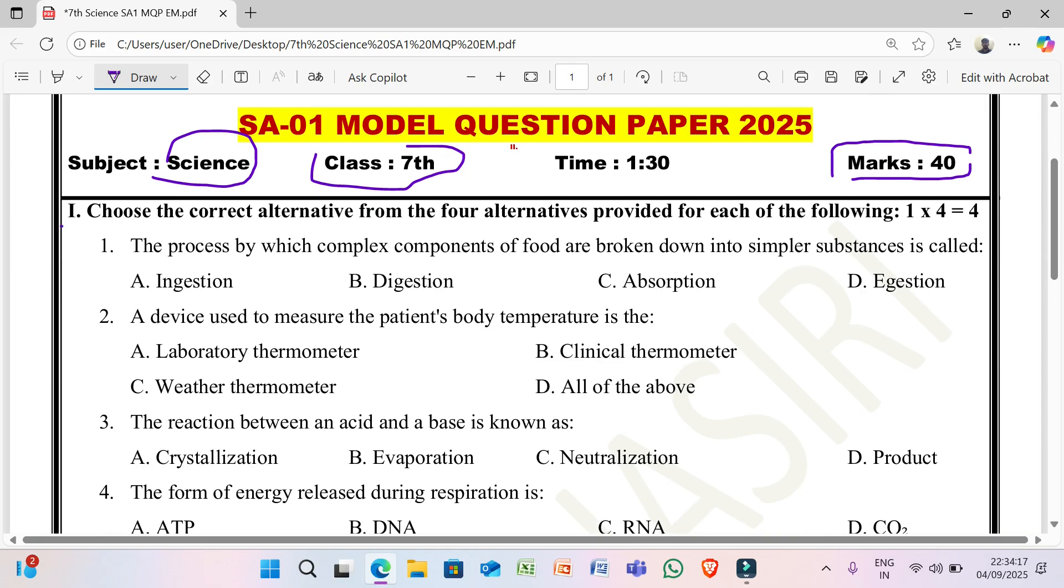1st question, choose the correct alternative from the 4 alternatives provided for each of the following, each question 1 mark, total 4 marks, 4 questions. 1st question, the process by which complex components of food are broken down into simpler substance is called: ingestion, digestion, absorption, egestion.